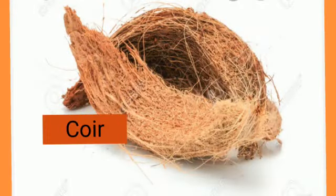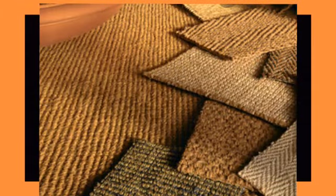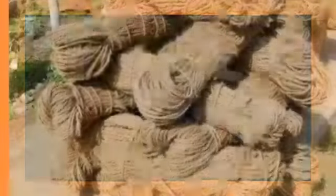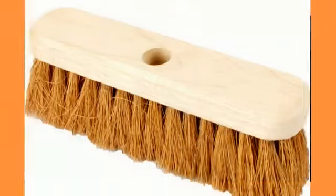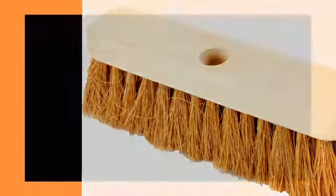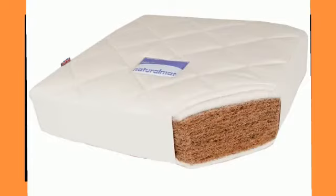Next is coir. Coir is obtained from the fibrous outer covering of the coconut. It is a waterproof fiber that is used to make mats, ropes, doormats, brushes, and stuffing of mattresses and pillows.